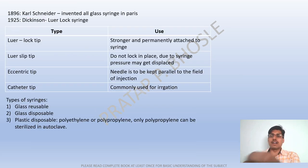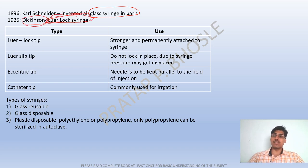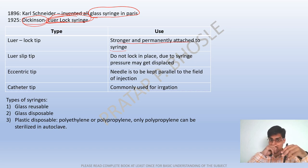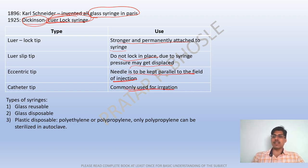Carl Snyder invented the all-glass syringe; Dickinson invented the Luer-lock syringe. Luer-lock tips are stronger and permanently attached to the syringe. Luer-slip syringes may get displaced under pressure. The eccentric tip needle is kept parallel to the field of injection. The catheter tip is commonly used in irrigation.